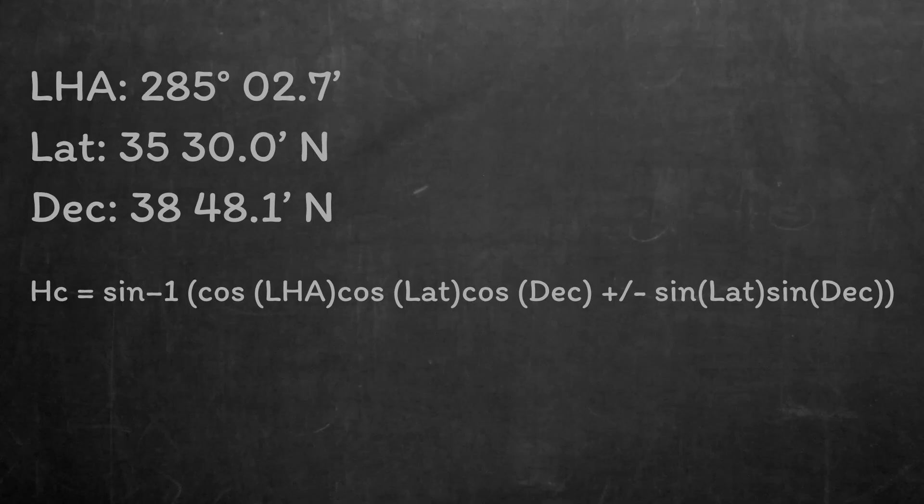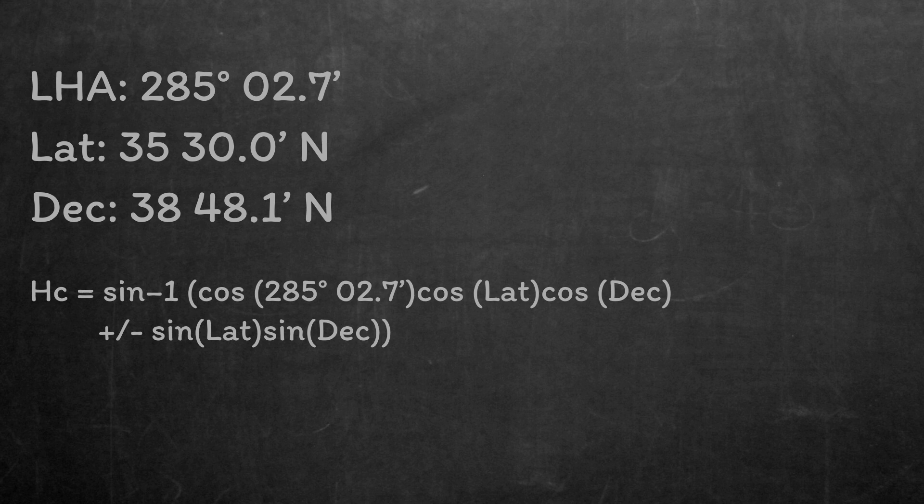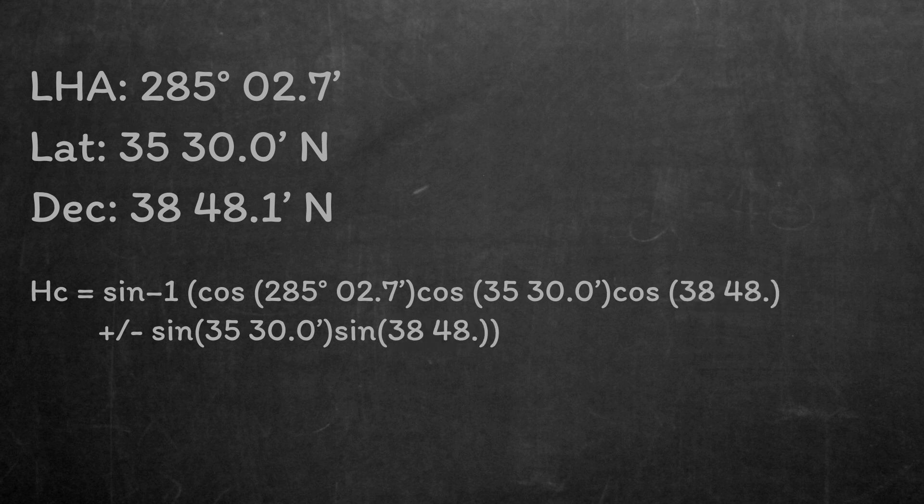So, coming back to our main formula, we now have all the information that we need. Local hour angle is 285 degrees, 2.7 minutes. Latitude is 35 degrees, 30.0 minutes north. Declination is 38 degrees, 48.1 minutes north. The sign of the latitude and declination is the same, so our plus-minus option is going to be a plus.